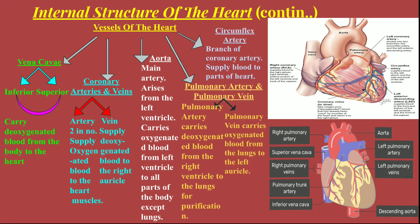Now we come to the vessels of the heart. The major ones are the vena cava, coronary arteries and veins, the aorta, pulmonary arteries and veins, and the circumflex artery. The vena cava is the major vein of two types — superior and inferior. The superior vena cava collects deoxygenated blood from the upper parts of the body, and the inferior vena cava collects deoxygenated blood from the lower parts of the body, both pouring into the right atrium.